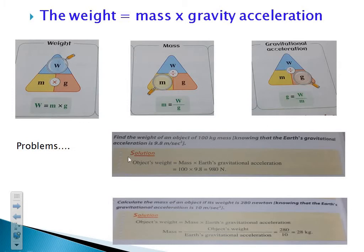Here I have two problems, which are very easy. Number one: find the weight. You are given the mass of the object, which is 100 kilograms, and the earth's gravitational acceleration is 9.8 meters per second squared. The weight equals mass times gravitational acceleration, which equals 100 times 9.8, equals 980 Newton.